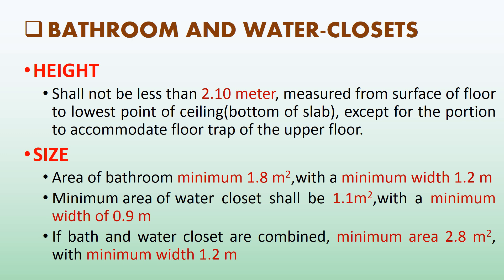Now let's discuss requirements for bathrooms and water closets. The height of a bathroom or water closet, measured from the floor surface to the lowest point of the ceiling or bottom of slab, shall not be less than 2.1 meters. The area of a bathroom shall not be less than 1.8 square meters with a minimum width of 1.2 meters. The floor area of a water closet shall be 1.1 square meters with a minimum width of 0.9 meters. If bath and water closet are combined, the floor area shall not be less than 2.8 square meters with a minimum width of 1.2 meters.